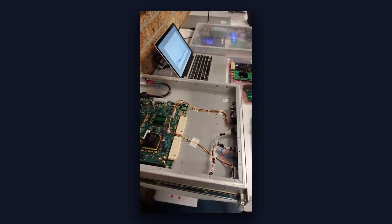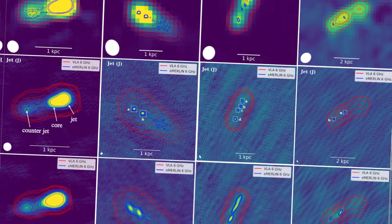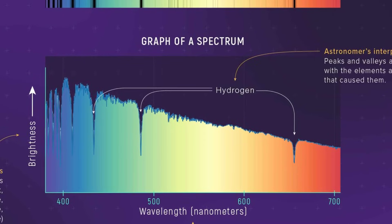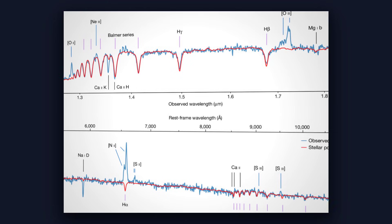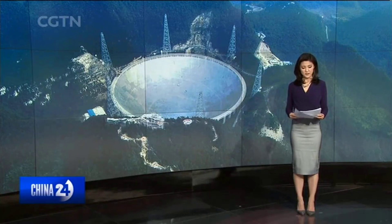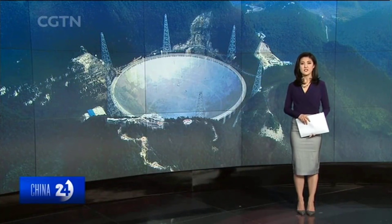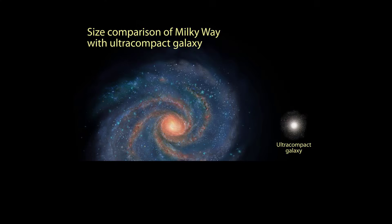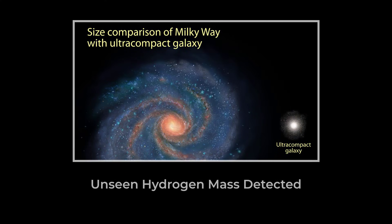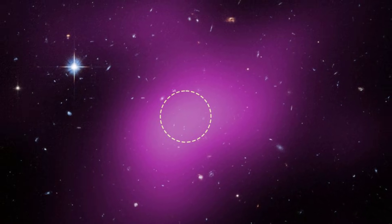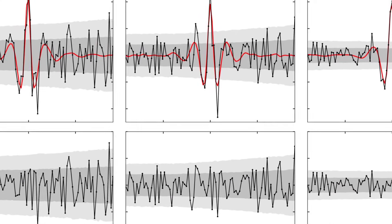The line was too sharp and too strong to be dismissed as interference or an instrumental echo. FAST's back-end systems had already filtered out terrestrial radio noise and cross-checked the signal across multiple scans. The hydrogen line stood out against the background, its profile consistent with a cold, static cloud, rather than a moving stream or fragment of galactic debris.